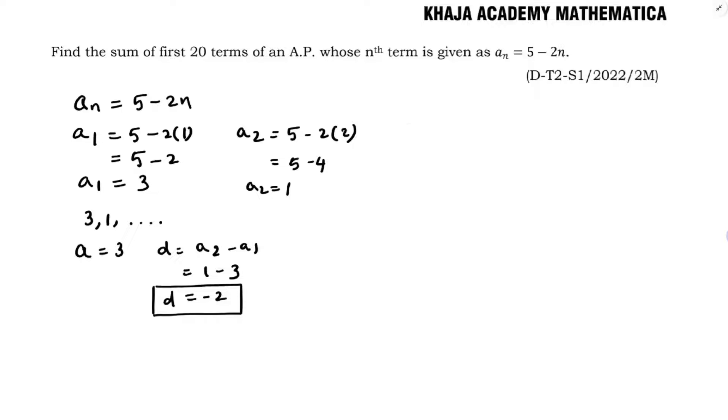Now we need to find S20, sum of 20 terms. The formula is N by 2 into 2A plus N minus 1 into D.